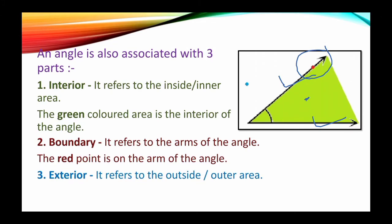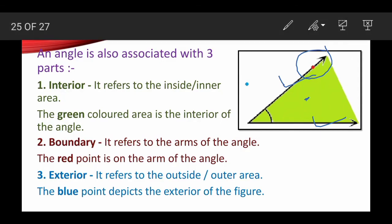Now come to exterior. Exterior means the area that is present outside of the angle. It refers to outside or outer area of the angle. All the space that is present outer of these two arms is known as exterior part. The blue point depicts the exterior of the figure. Here the blue point, this one is present outer of the figure. If we take a point here, we can say that this point is present in the exterior of the angle.